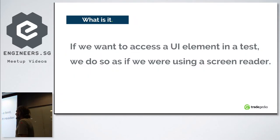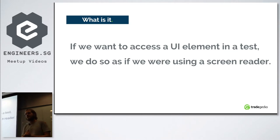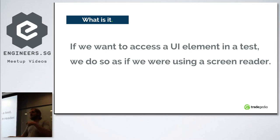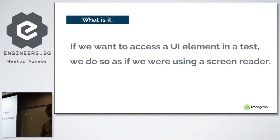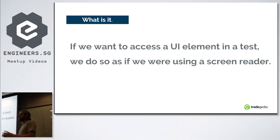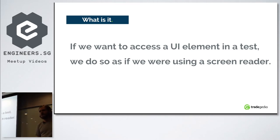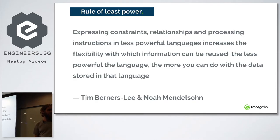What is semantic testing? If we want to access a UI element in a test, we do so as if we're using a screen reader — interacting with the page as a user would, but a less powerful user without cognition and eyes. This ensures we can test whether your app is usable from a screen reader, because we implement the same specification defined by the W3C.